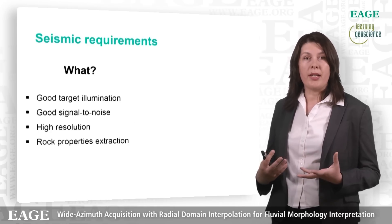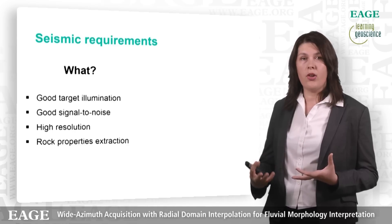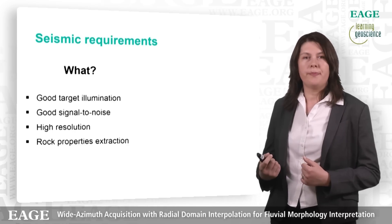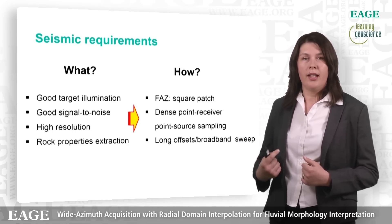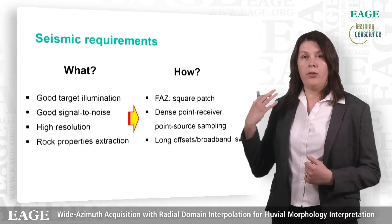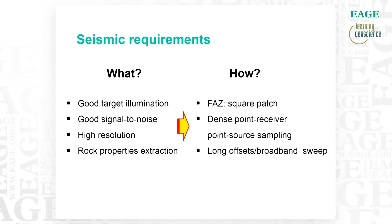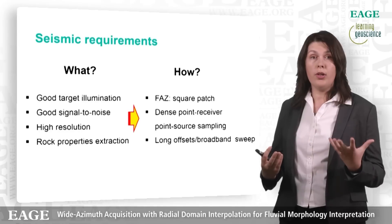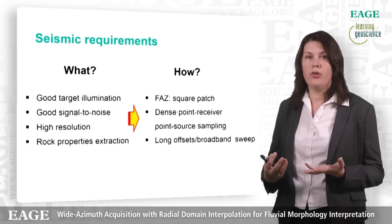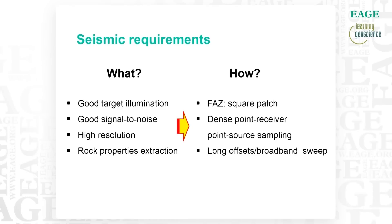So what do we need from seismic? We need good target illumination, good signal to noise, high resolution, and rock properties extraction. To achieve this, we use a square patch which will provide a full isotropic survey with no preferences in any direction. Dense point source, point receiver sampling provides adequate sampling not only for signal but also for noise, resulting in good signal to noise and high resolution. Long offsets and a broadband sweep focusing not only on high but also on low frequencies will enable better rock properties extraction.